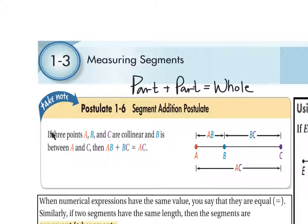It says here, if three points A, B, and C are collinear (if you remember in your vocabulary, collinear means that those three points are on the same line), and B is between A and C, then segment AB plus segment BC is equal to the distance of segment AC. So let's go over here and look at the picture.